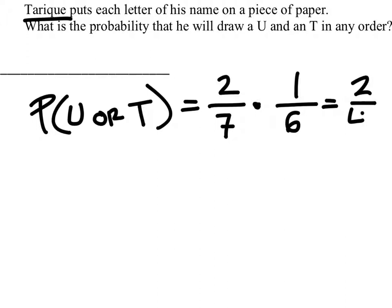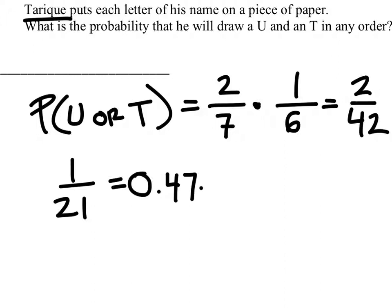That gives us two out of 42, which is the same as one out of 21, which as a decimal, one out of 21, 0.476, which is about 47.6 percent.